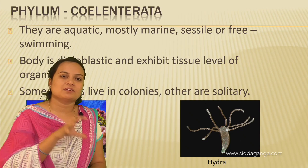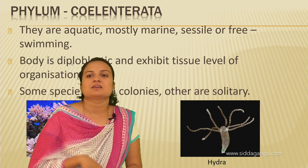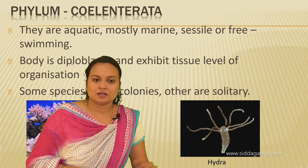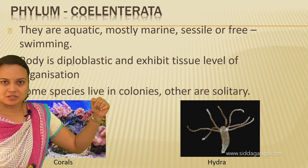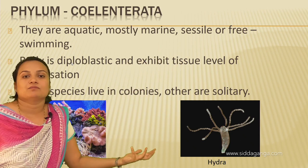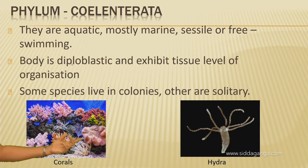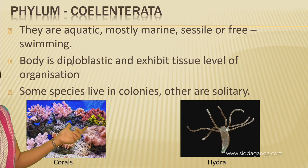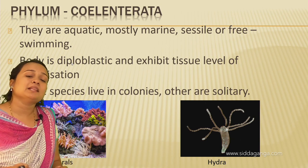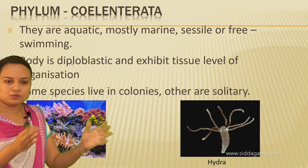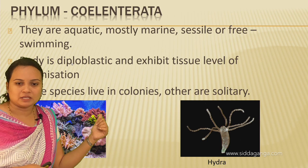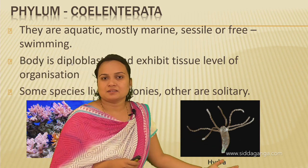Platyhelminthes are either free living or parasitic. If they are parasitic, they are usually endoparasites — meaning they live inside the body of another organism. Parasites depend on other organisms for food and shelter. If Platyhelminthes are parasites, they will be present inside the body of another organism — that is endoparasitism.